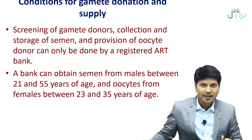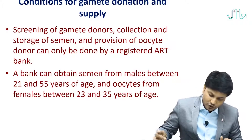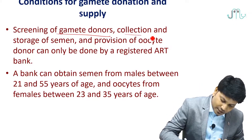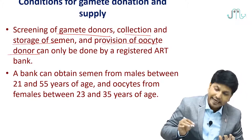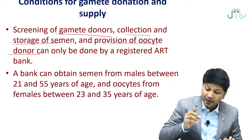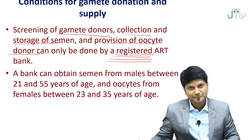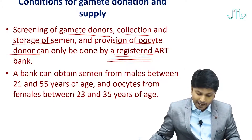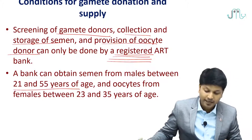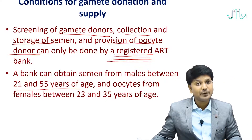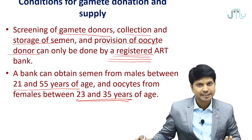What are the conditions for gamete donation and supply? Screening of the gamete donors, collection, and storage of the semen, and provision of oocyte donors can only be done by a registered ART bank. A bank can obtain semen from males between 21 to 55 years and oocyte from donors between 25 to 35 years to make sure the gametes are healthier.